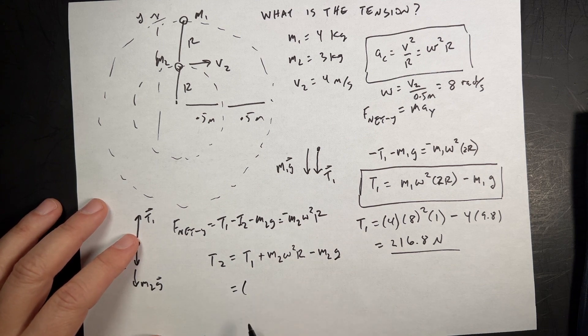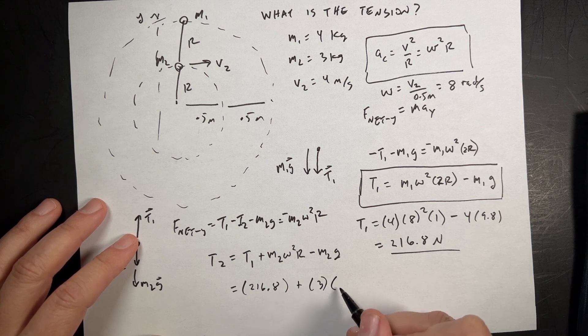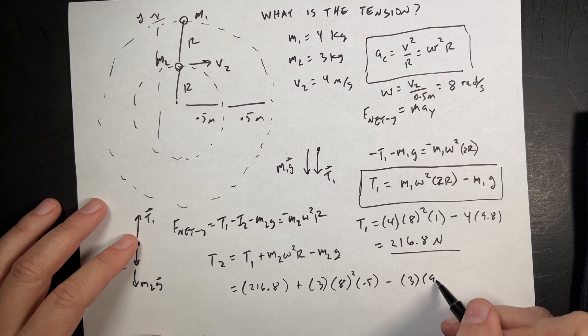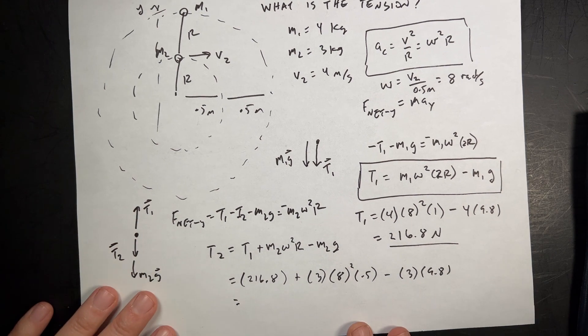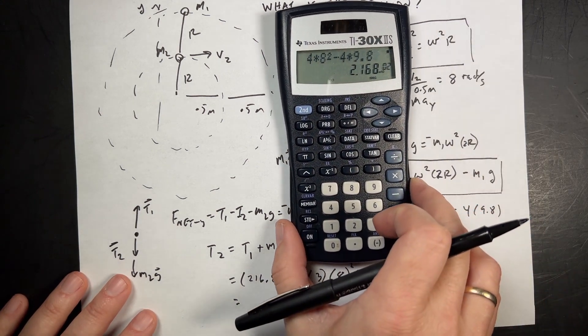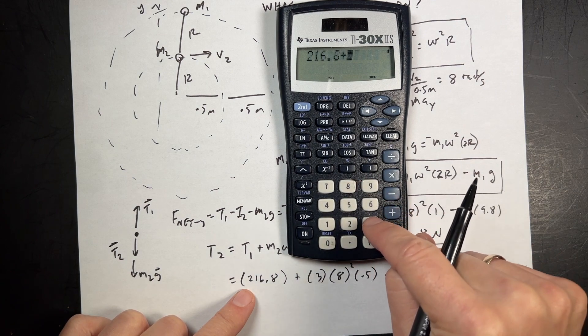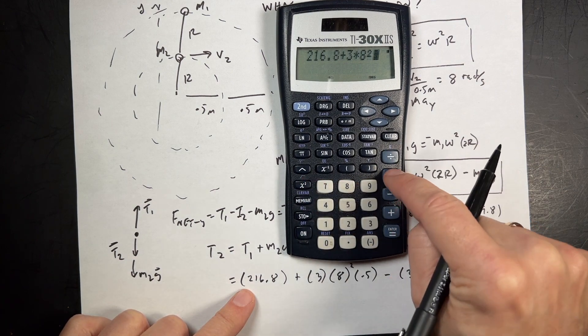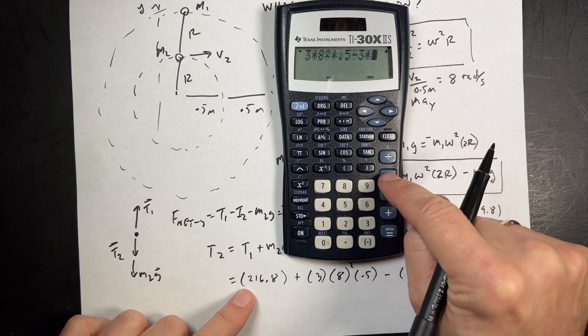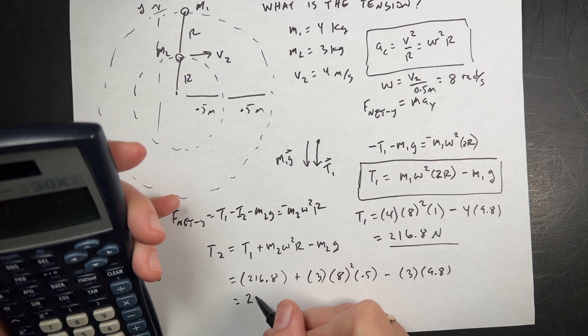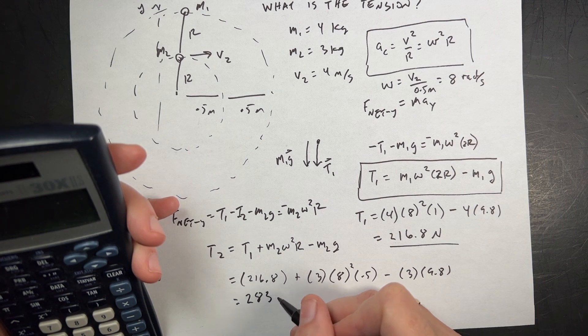If I put in my values, I get 216.8 plus 3, the mass, omega is 8 squared. This has a radius of 0.5 minus 3 times 9.8. This is actually easier than I thought, I'm a little disappointed to tell you the truth. Let's just plug it in. 216.8 plus 3 times 8 squared times 0.5 minus 3 times 9.8 equals. And I get 283.4 newtons.